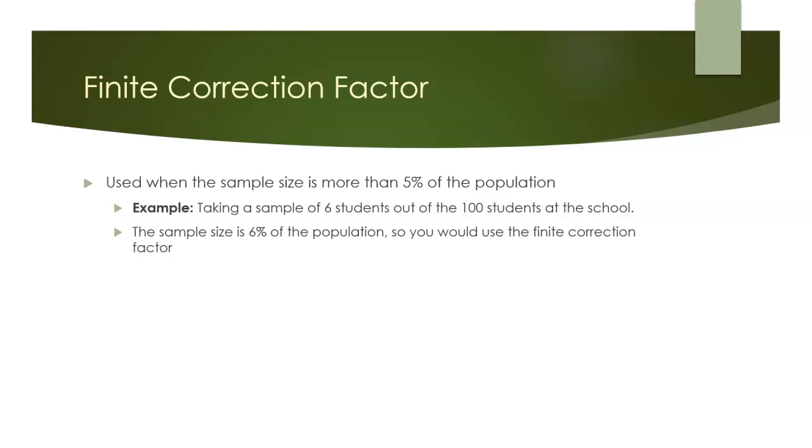For example, let's say we're taking a sample of 6 students out of the 100 students at the school. Our sample size would be 6, our population size would be 100. So that means the sample size would be 6% of the population, so we would use the finite correction factor.